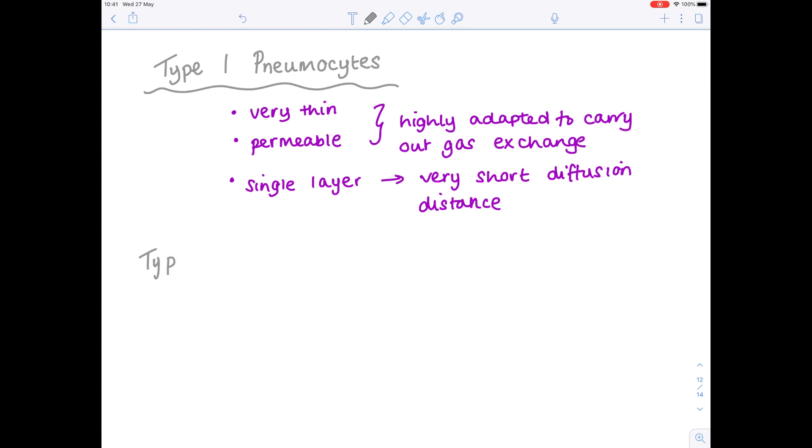Next up, type 2 pneumocytes. The type 2 pneumocytes, we're really looking at the fact that they moisten, so effectively they secrete a fluid which keeps the inner surface of the alveolus moist. And crucially, that's needed to allow gases to dissolve.